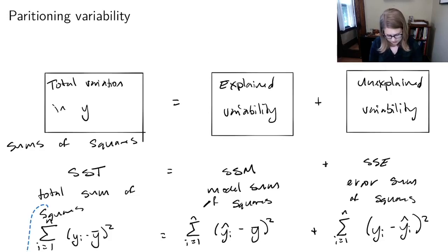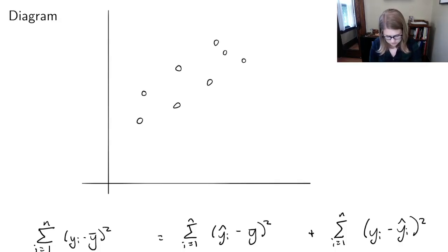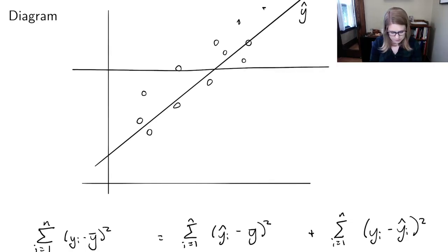I'm going to copy these equations so that I can have them on my next page as well. So I'd like to draw you a diagram. And in this diagram, I'm going to draw some points. And I'm going to draw a regression line through these points. Let's say it looks like that. I'm going to call this Y hat, my predicted values. And then I'm also going to draw a flat line through here. We'll call this Y bar.